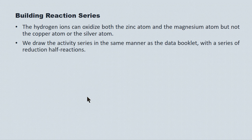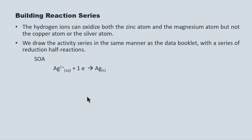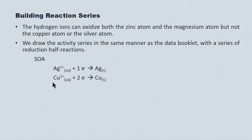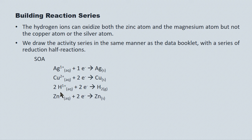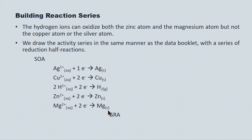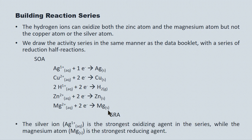We draw our activity series in the same manner as the data booklet, where the entire table is set up as a series of reduction half-reactions. We put our strongest oxidizing agent — the silver ion — at the top left, followed by the copper 2+ ion as the second strongest. The protons from the acidic solution rank third, as they failed to oxidize silver or copper but successfully oxidized zinc and magnesium. The magnesium atom is therefore the strongest reducing agent in the system. In summary: silver ion is the strongest oxidizing agent, and magnesium atom is the strongest reducing agent.